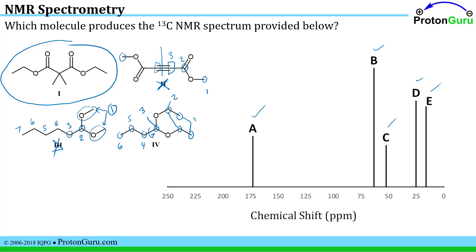And you could do some sort of double check. For example, if you know there's a carbonyl carbon, those tend to come rather high in terms of chemical shift. So signal A confirms that whatever compound you looked at was in fact a carbonyl species.